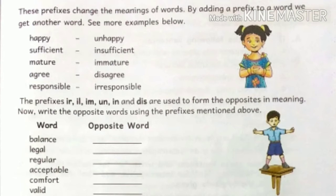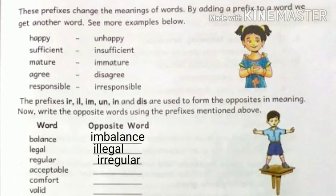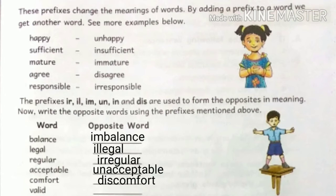Now, write the opposite words using the prefixes mentioned below. Balance → imbalance (IM). Legal → illegal (IL). Regular → irregular (IR). Acceptable → unacceptable. Comfort → discomfort. Valid → invalid.